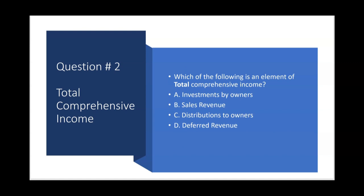Topic number two: total comprehensive income. The question asks which of the following is an element of total comprehensive income. Comprehensive income is the change in owners' equity — stockholders' equity — caused by everything other than investments by owners and distributions to stockholders. So dividends paid would not reduce total comprehensive income, and owner contributions would not be an addition to it.